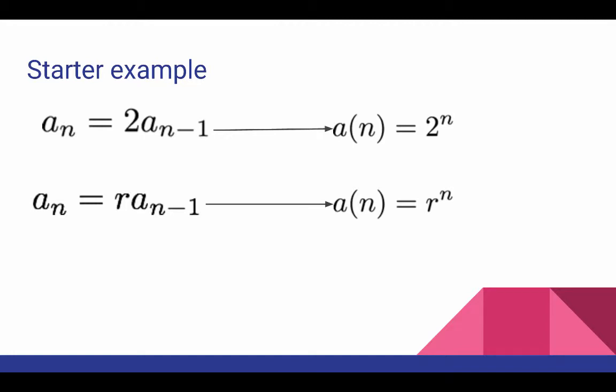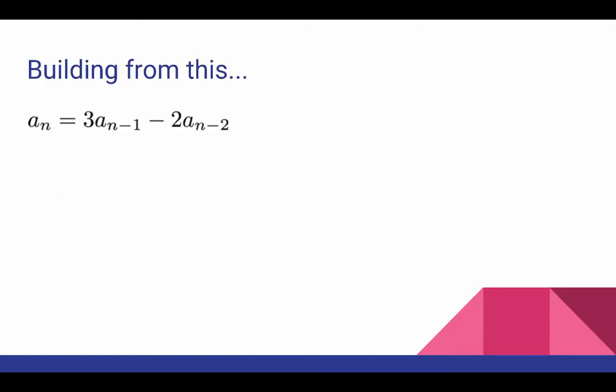So building from this, what happens when we have a linear second order homogeneous recurrence relation like this one? You should first check to see that just peeling off the numbers and making exponential functions out of them, which worked for the starter example, does not work here. These two things are not closed formula solutions to the recurrence relation.